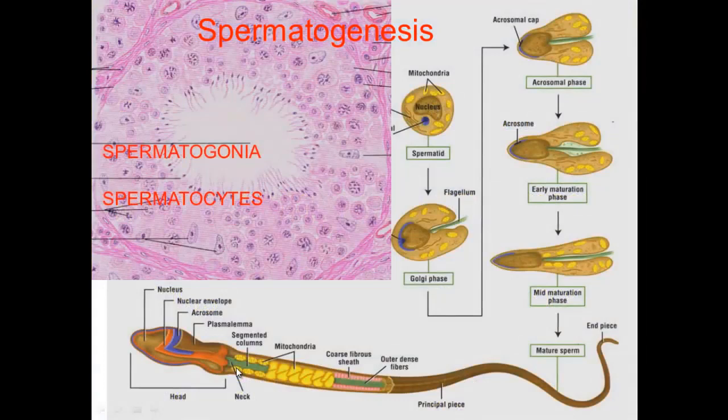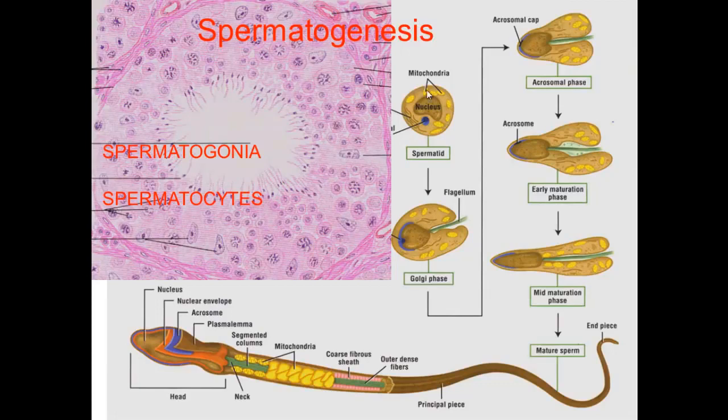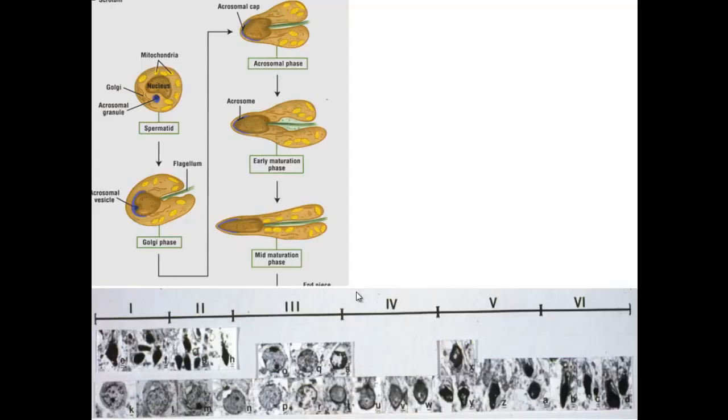So we have spermatogonia divided by mitosis, spermatocytes divided by meiosis to make different individuals, and then you have differentiation of the round cell to that that looks like a sperm.